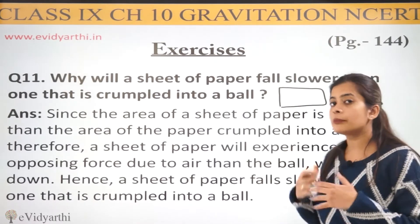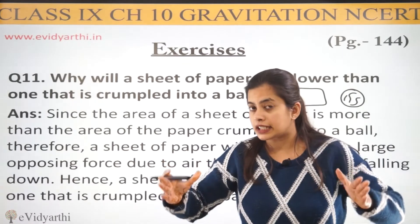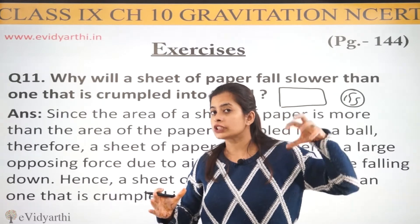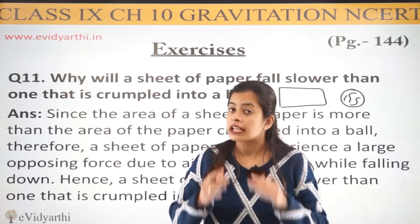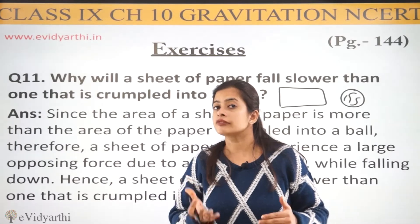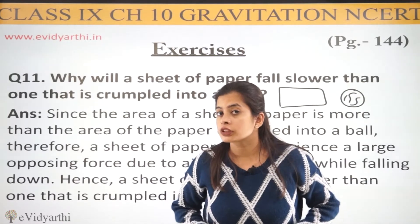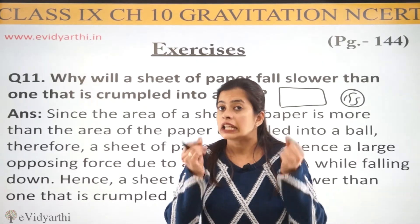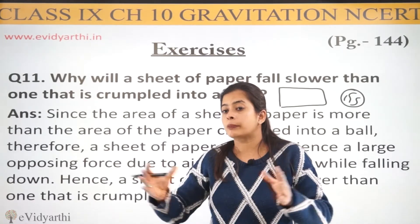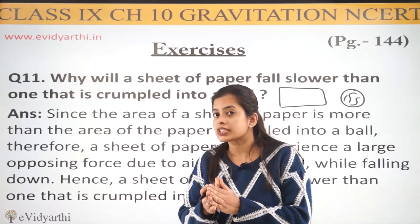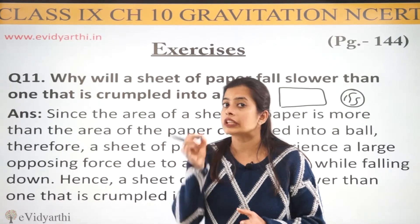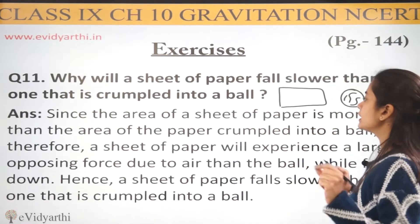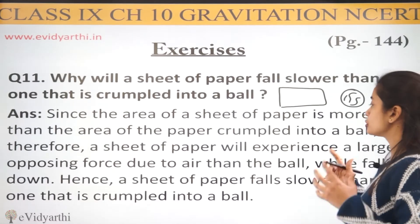So iska area comparatively, agar hum ball ke area ke saamne dekhen, toh woh area zyada hai. Jiski wajah se — aapko pata hai pressure kya hota hai — force upon area. Toh agar area zyada hai, toh kya — opposing force hai air — air uspe zyada opposing force laga sakegi. Dono hi objects pe air apna opposing force lagaati hai, lekin zyada kiska asar ho raha hai? Paper pe, kyunki uska area comparatively zyada hai. Aur area zyada hone ki wajah se, uska khud ka pressure neeche girne ki taraf kaafi kam hoga, jiski wajah se air ka jo opposing force hai, uspe woh zyada hone wala hai. Therefore a sheet of paper will experience a larger opposing force due to air than the ball.